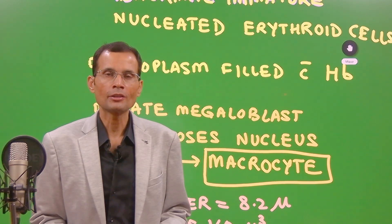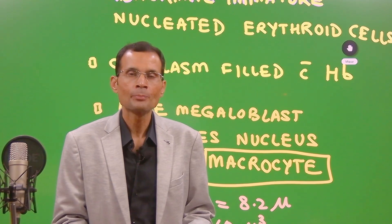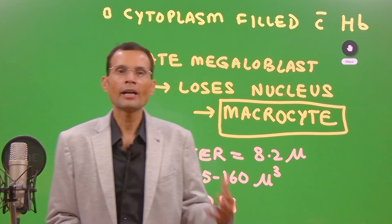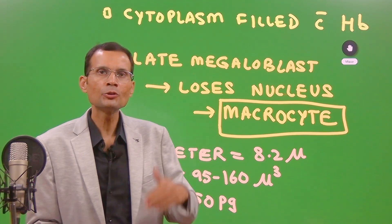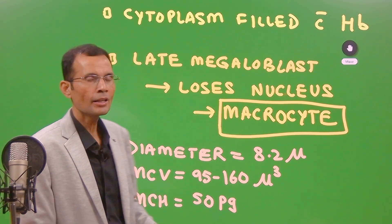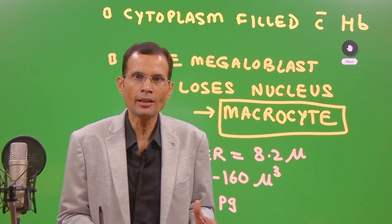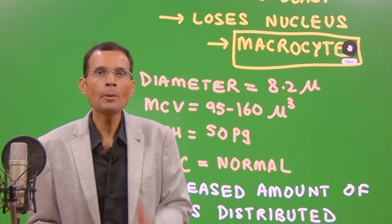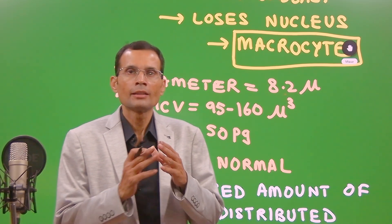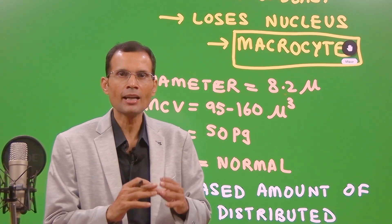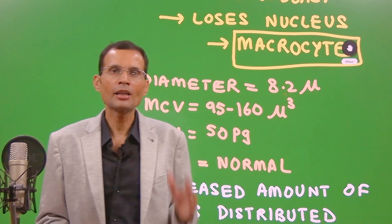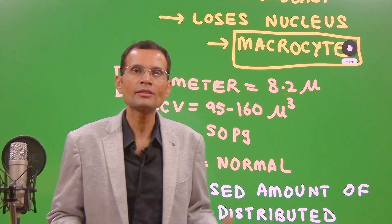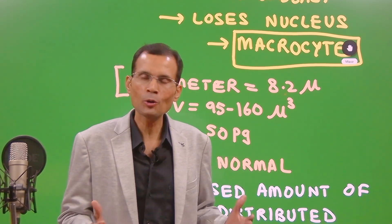The cytoplasm of megaloblasts is filled with hemoglobin — this is an important aspect. Late megaloblasts finally lose their nucleus, and in the peripheral blood we see a macrocyte: non-nucleated but very large, filled with lots of hemoglobin. However, the cell number is very low because without nuclear maturation, cell division is affected. Cells dividing slowly means fewer in number, resulting in anemia. Although these cells have hemoglobin, there is less overall because the cell number itself is less, so eventually hemoglobin is also less.